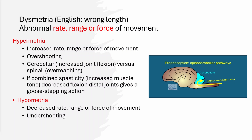Hypometria is one of the changes that can occur when proprioceptive information is interrupted or not integrated properly. It is seen in both spinal cord disease and cerebellar disease. Because of where the lesions are, you may also get an increase in muscle tone, referred to as spasticity. If you get a combination of hypermetria — an overshooting action — with increased tone, that overshooting becomes a goose-stepping action, like the goose-step march seen in some countries.